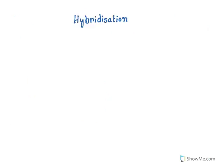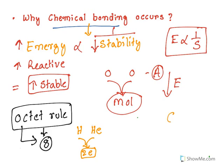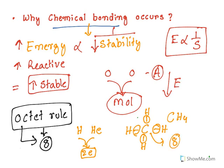Let us see a simple example — methane, CH4. Carbon forms 4 bonds because it is tetravalent. Every bond is made up of 2 electrons, so totally how many electrons are surrounding carbon? There are 8 electrons. Because 8 electrons are there, it satisfies the octet rule and it is stable. Similarly, hydrogen — surrounding each hydrogen you have 2 electrons, so hydrogen with 2 electrons becomes stable. Methane is a stable molecule because it satisfies the octet rule. The valency shell electrons are fulfilled and it has got low energy.